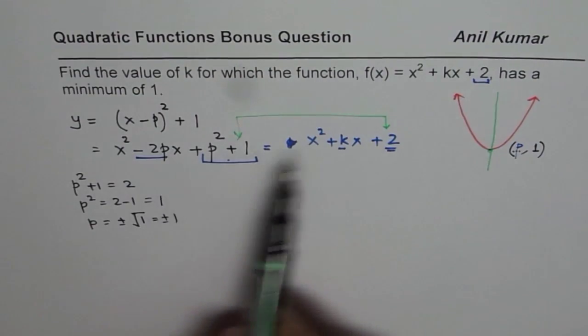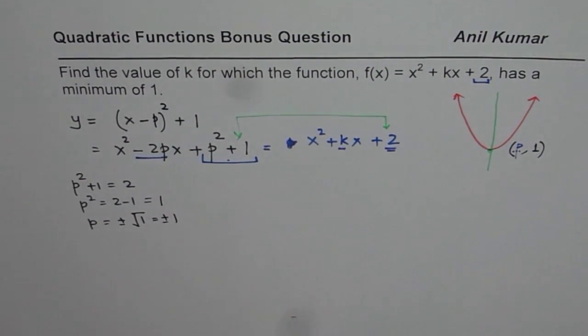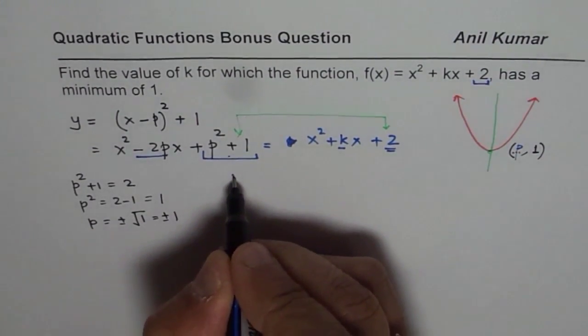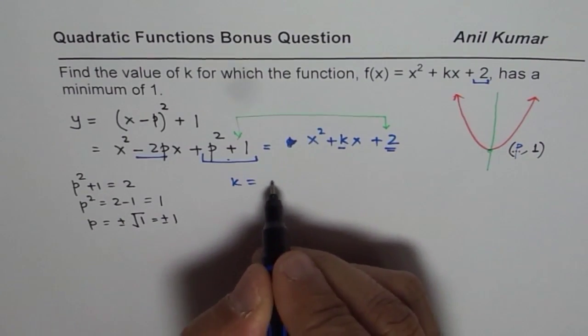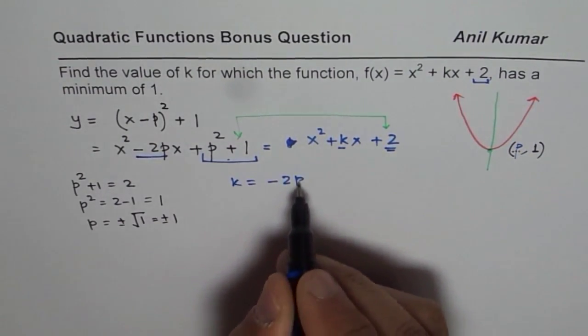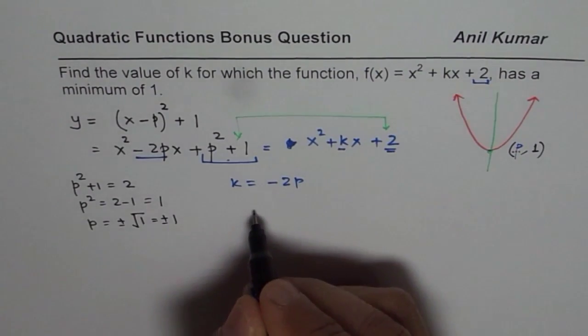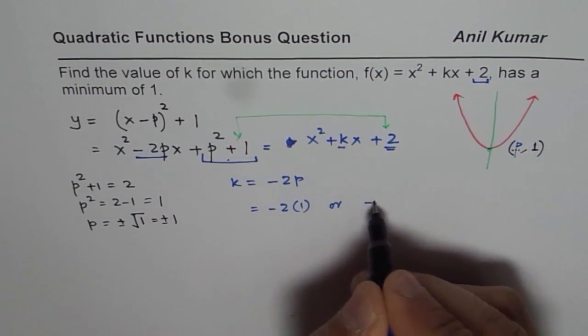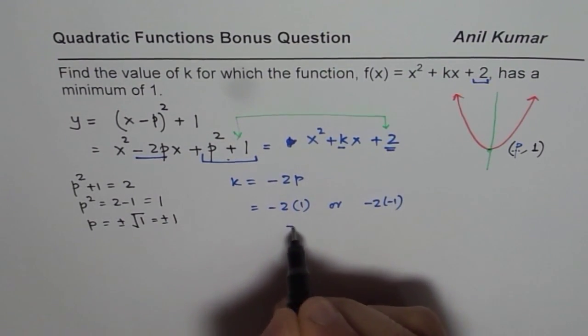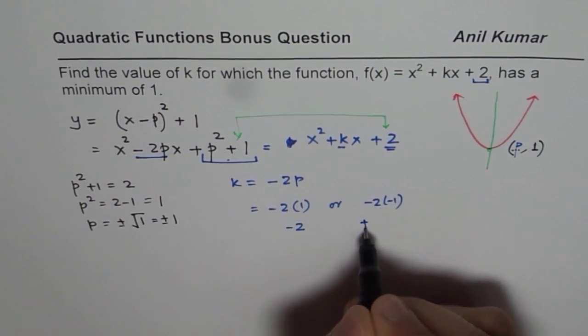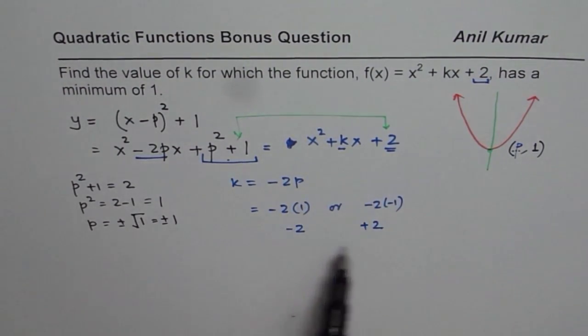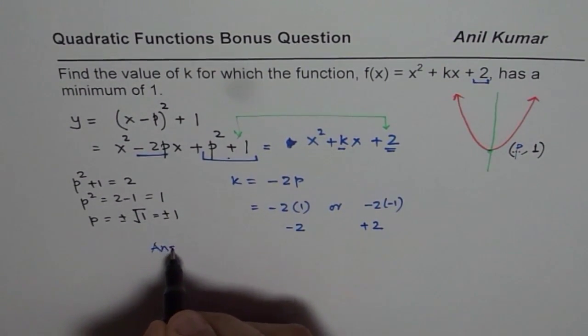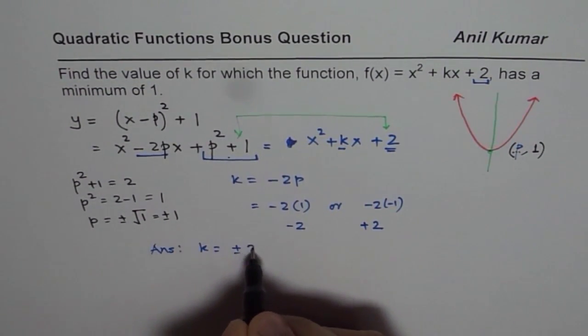Now, to find the value of k, we can compare k equals - we say k is equal to minus 2p. Now, p could be either plus 1 or minus 1. So we get k equals minus 2 times 1 or minus 2 times minus 1. So that gives us minus 2 or plus 2. So there are these two values of k which can give us the answer. So now we can write down our answer that k equals plus minus 2.